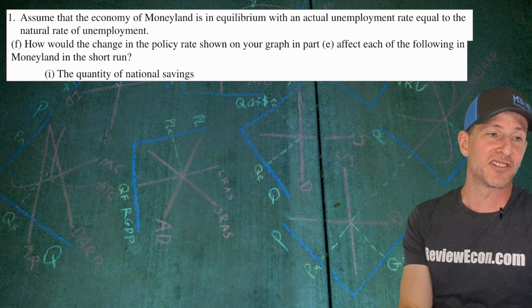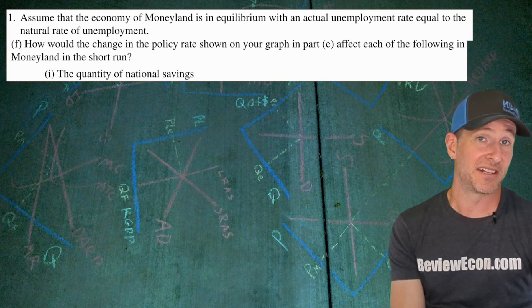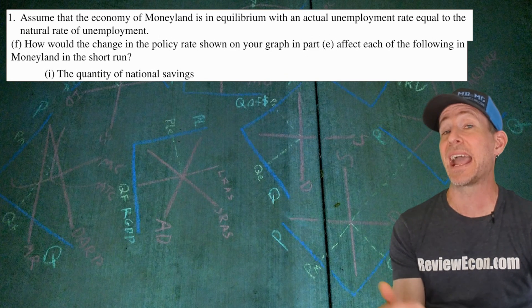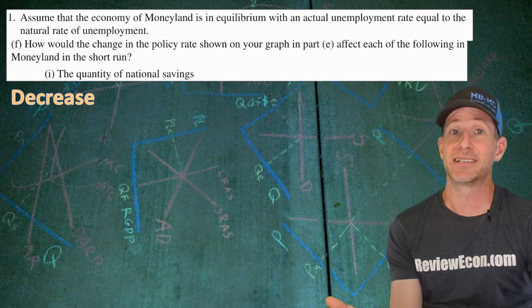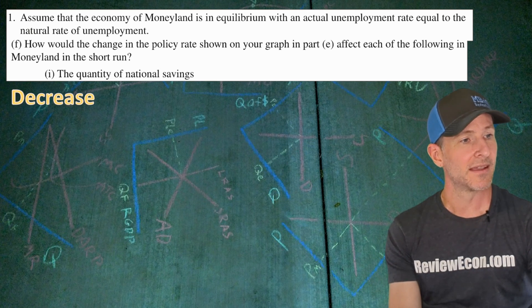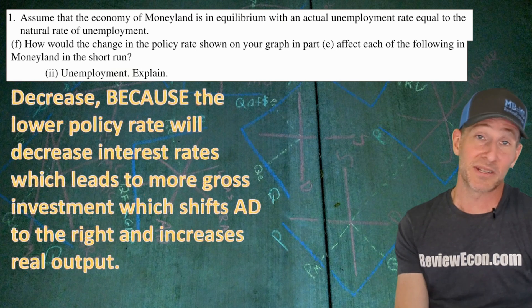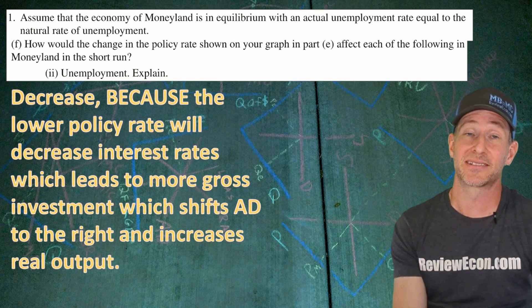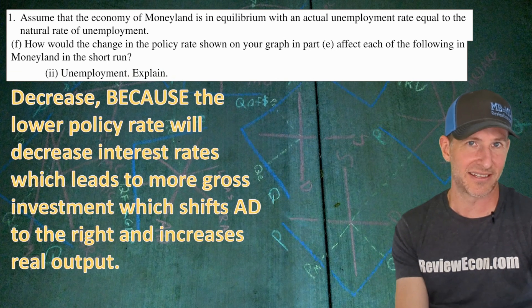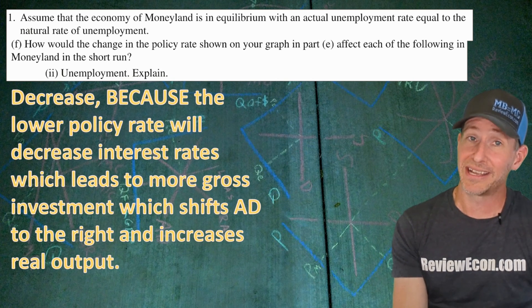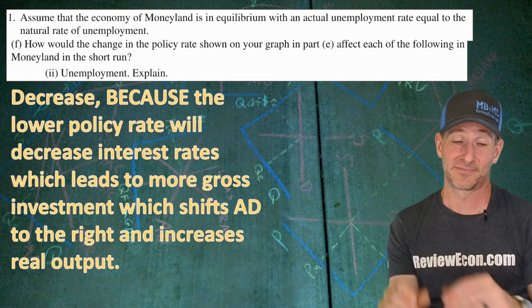How does the change in the policy rate affect each of the following in Moneyland in the short run? For the quantity of national savings: interest rates have gone down, and savers get paid these interest rates. Since people aren't being paid as much interest, they won't be willing to save as much — so national savings will decrease. For unemployment: it will decrease. The lower policy rate decreases interest rates across the economy, leading to more gross investment and other interest rate-sensitive spending, which shifts aggregate demand to the right and increases real output.